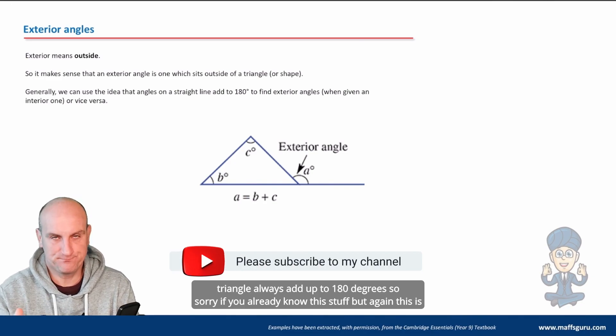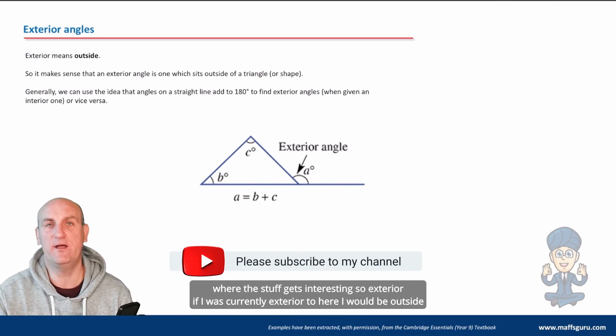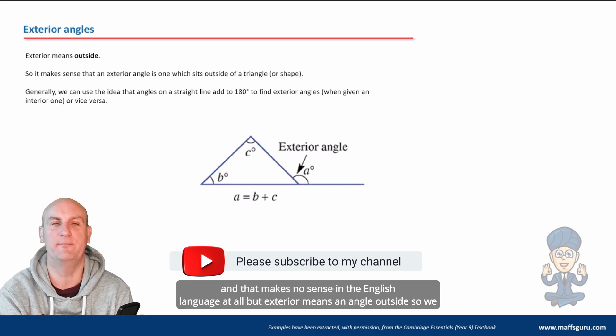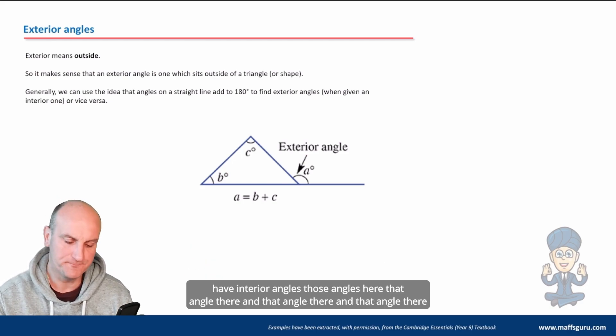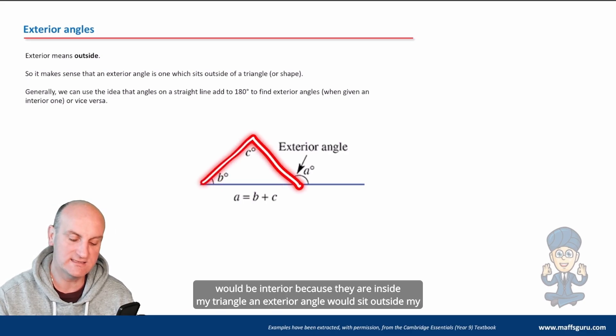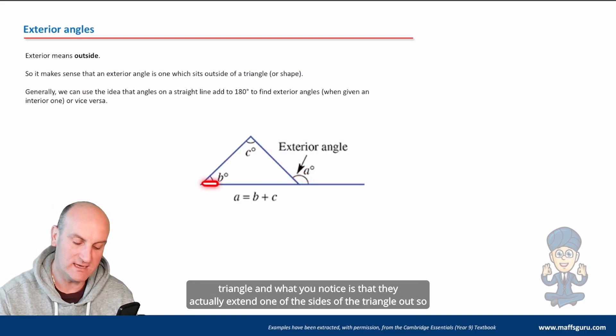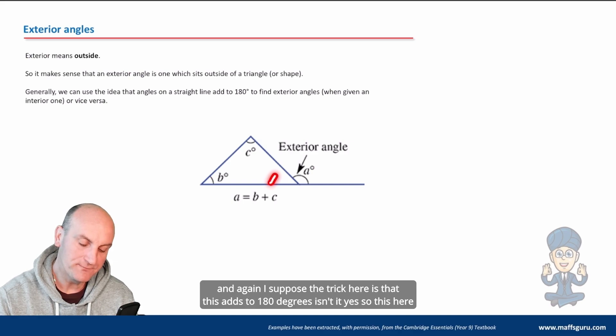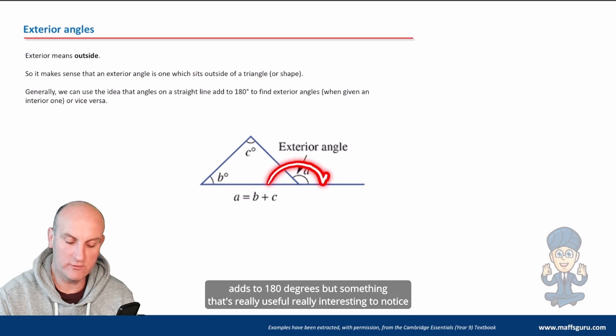Exterior angles: exterior means an angle outside, and that makes no sense in the English language at all, but exterior means an angle outside. We have interior angles - those angles here, that angle there and that angle there - would be interior because they are inside my triangle. An exterior angle would sit outside my triangle, and what you notice is that they actually extend one of the sides of the triangle out. So we've taken this side length and extended it out, and that's created this exterior angle.